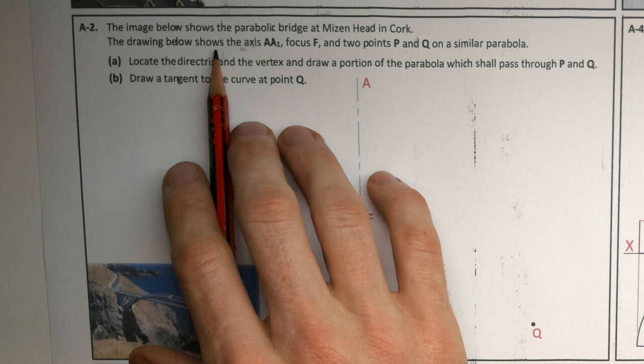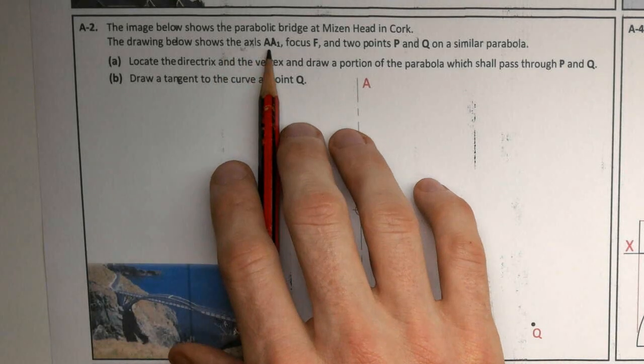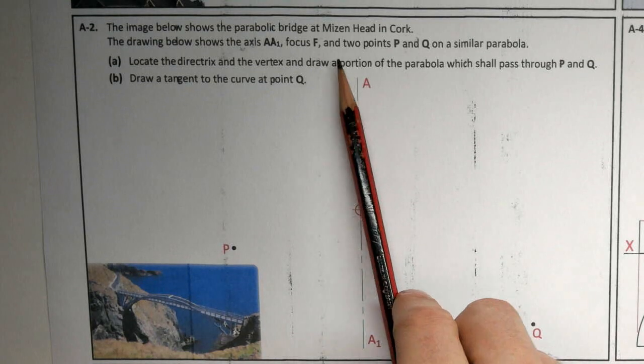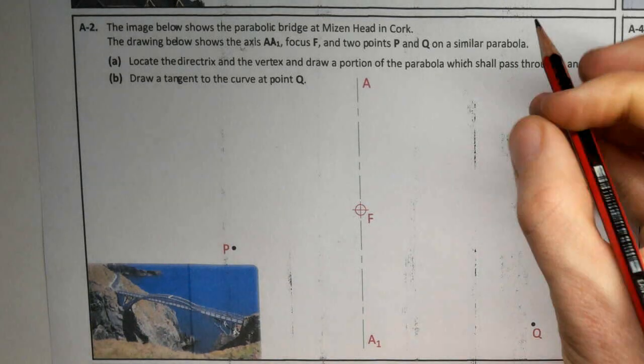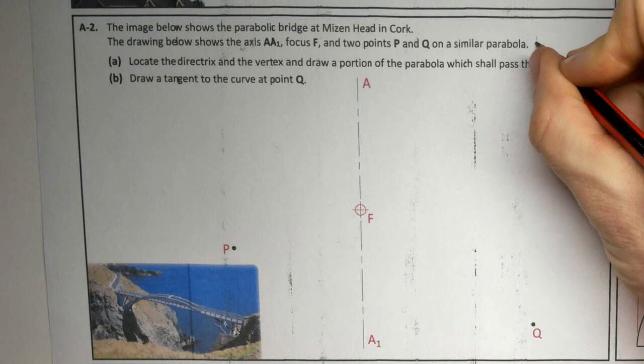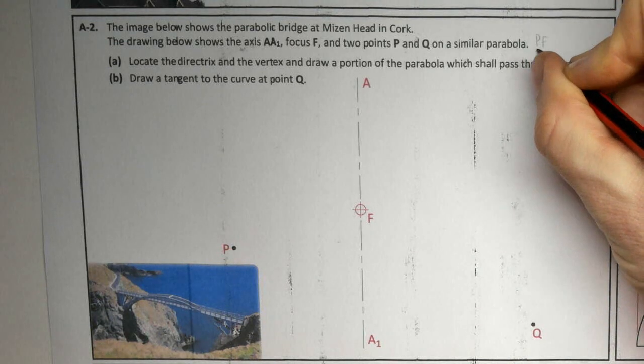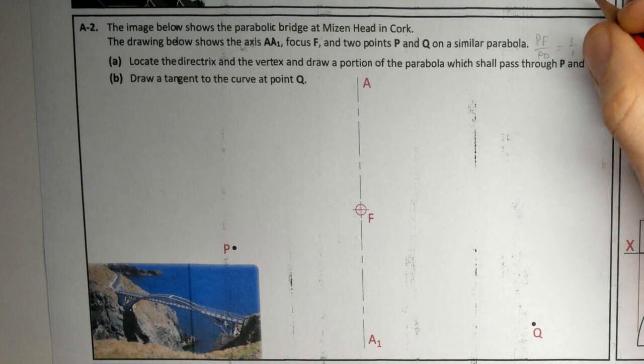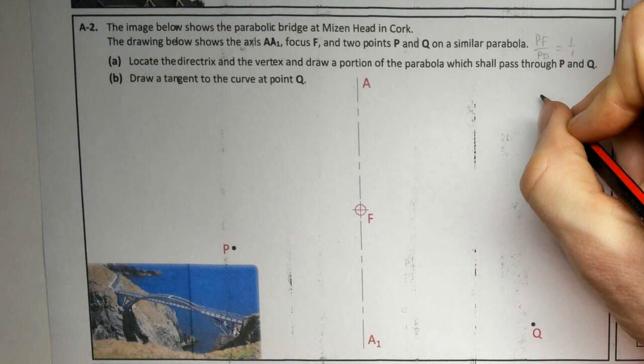The drawing below shows axis AA1, so that's our axis, our focus F, and two points P and Q on a similar parabola. So straight away when we're on a conics question, if we hear parabola, we know that PF over PD is equal to 1 over 1. So they're in proportion to each other.